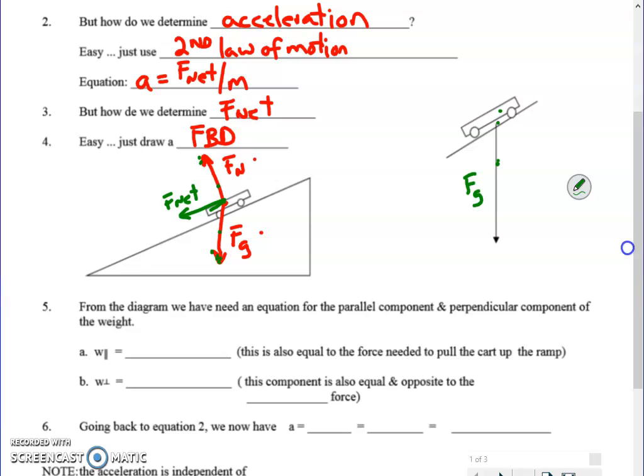So one of the legs of that triangle would be perpendicular to the surface and the other leg would be parallel to the surface such that these are right angles. So take a look at that carefully. I am calling that Fg perpendicular and I'm going to call this Fg parallel. I'm not going to use X and Y here because it's neither horizontal nor vertical.